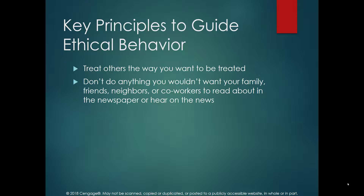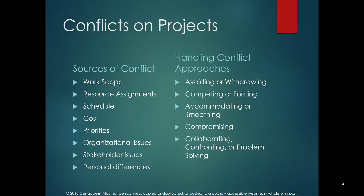Conflict can happen in different areas and have various sources: work scope, where people disagree about tasks; resource assignment or schedule; cost; task priority; and organizational issues. To resolve conflict there are several approaches. The first is avoiding or withdrawing — temporarily ignoring the conflict — but this is not efficient because the conflict will resurface later and escalate, becoming worse the second time.